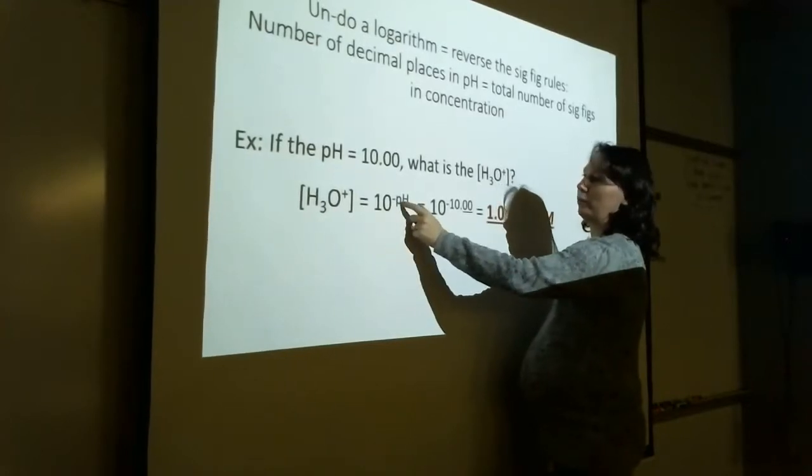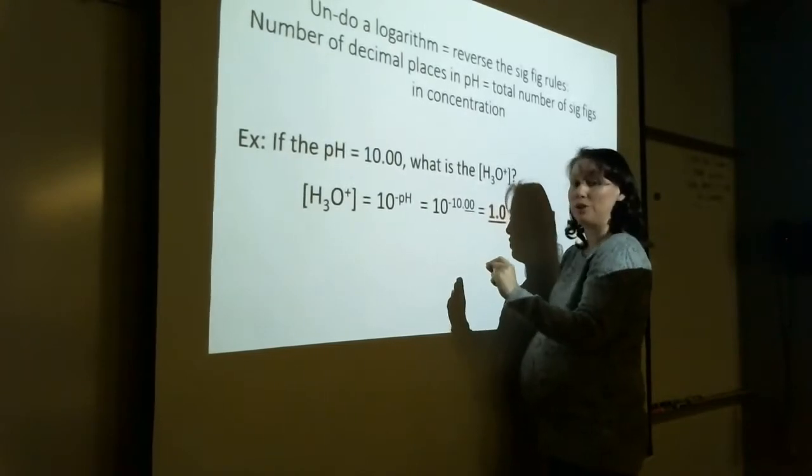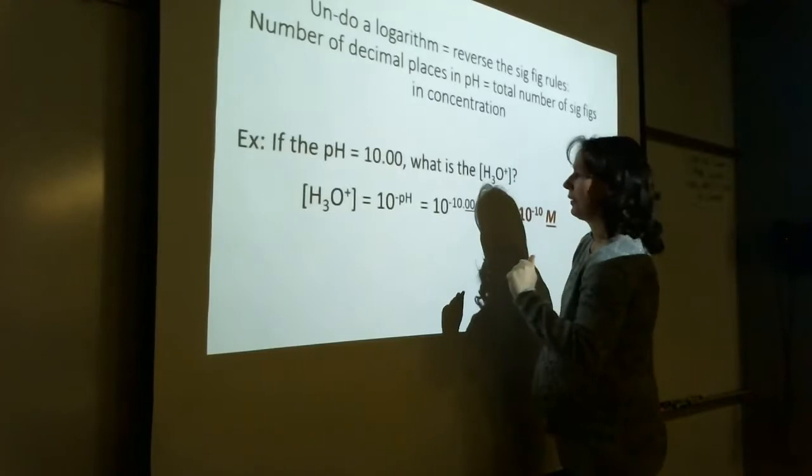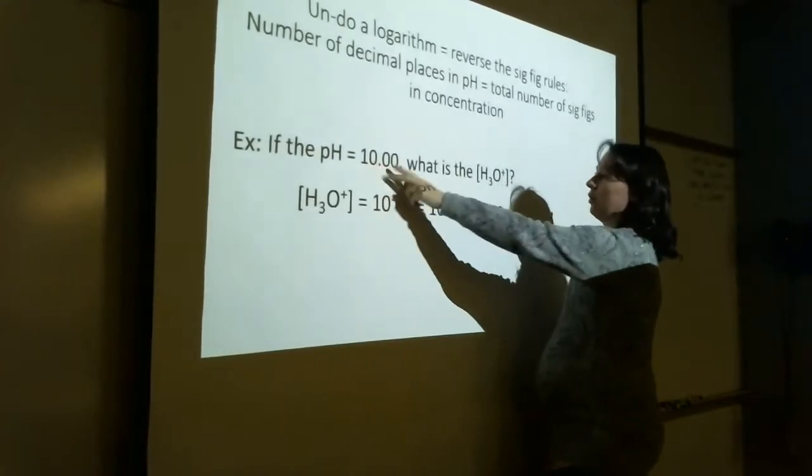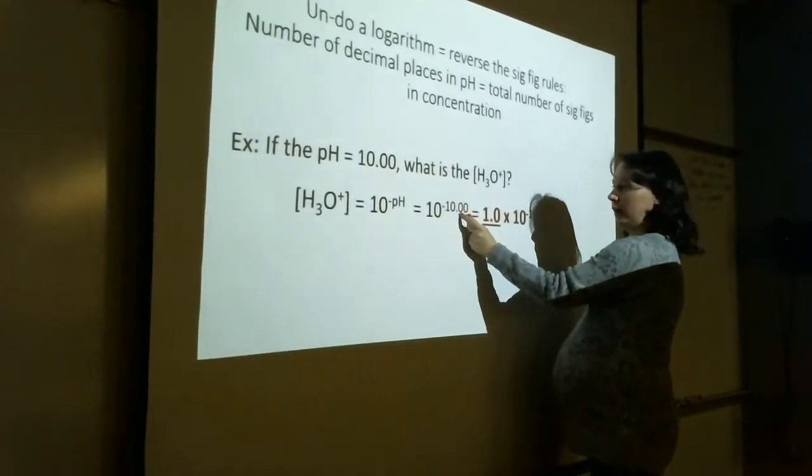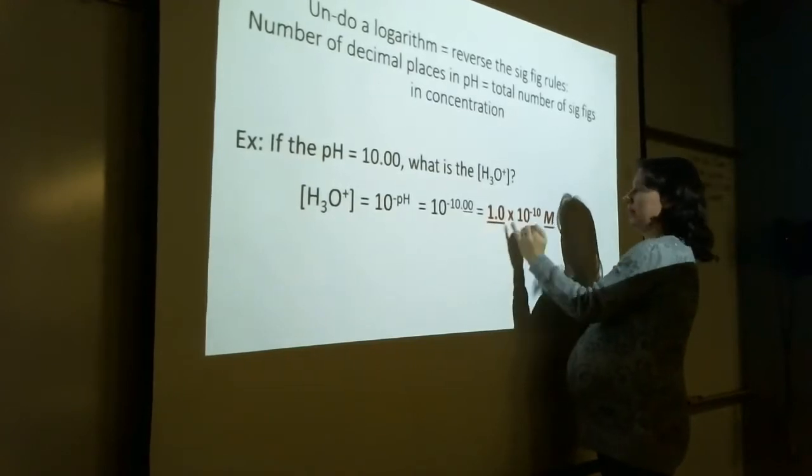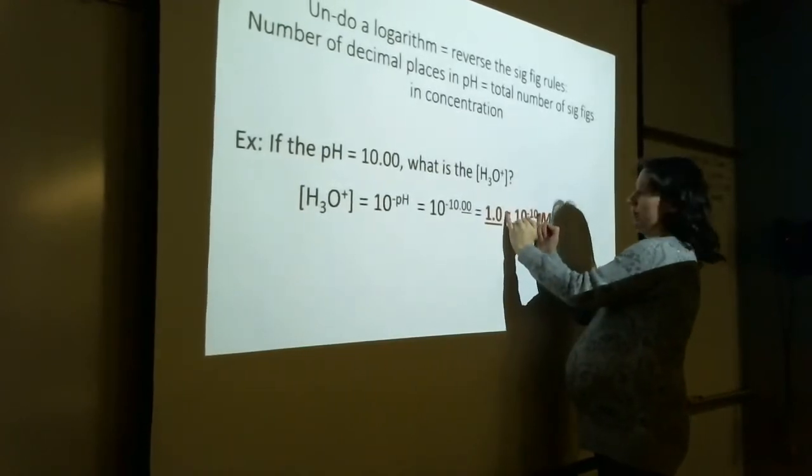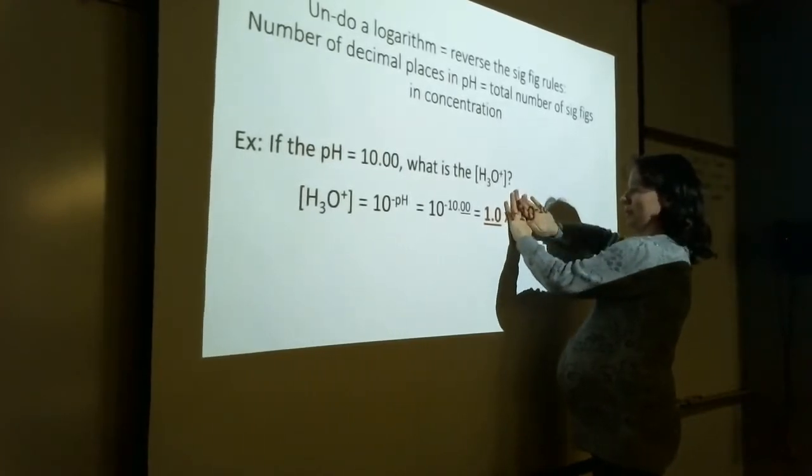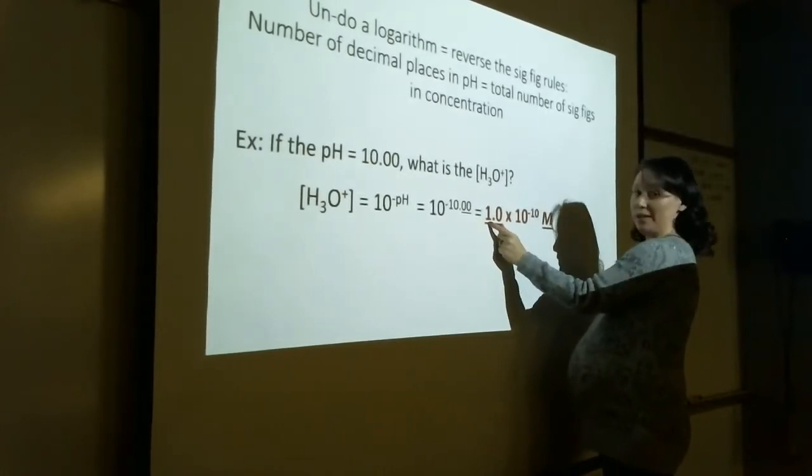What I'm doing here to undo a logarithm is 10 to whatever that number is, because if I took the logarithm in order to get the pH, I have to raise it to the 10 to get rid of the logarithm. So if this value is 10.00, this value has two decimal places. Two decimal places here translates to two total sig figs here. This is just the exponent stating how far away it is from the decimal, so that's not part of my significant figures. There are two decimal places here that gives us two sig figs here.